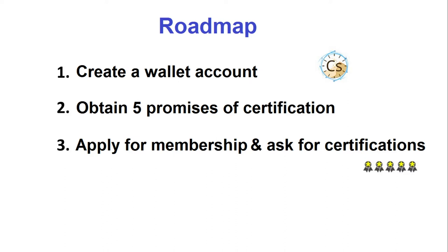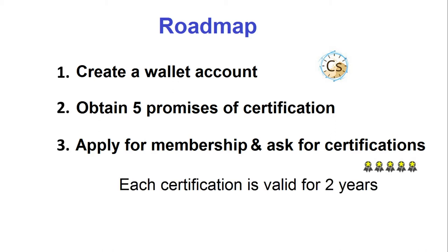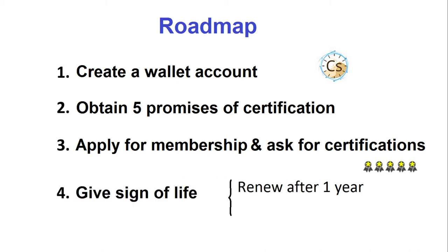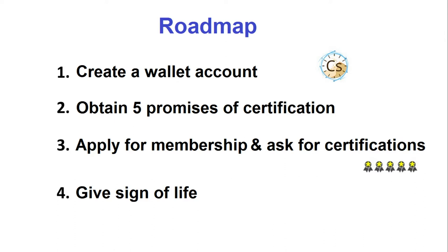If all goes well, you are now in the Web of Trust and your wallet account has become a member account — UDs will appear daily. Each certification is valid for two years, so it is useful to ask for certifications as you meet new members to always maintain five active certifications. The member account must also be renewed every year — a simple formality requiring no one else. If you forget to renew on the anniversary date, UD payments are suspended, and after one more year the account can no longer be renewed because to the system you are considered deceased.